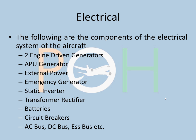Electrical system of the Airbus A320 aircraft. These are the following components of the system: two engine driven generators, APU generator, external power or ground power, emergency generator, static inverter, transformer rectifier, batteries, circuit breakers, AC bus, DC bus, essential bus, etc. We are going to talk about all of these now one by one.